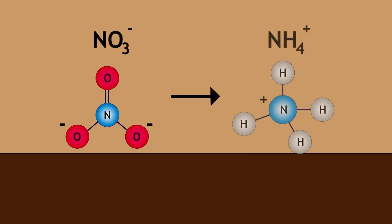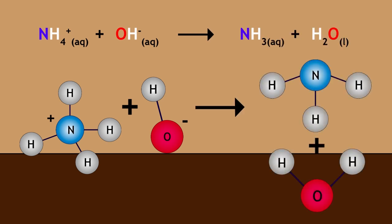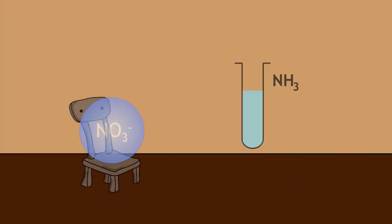Nitrates can be reduced to ammonium ions, which can then react with hydroxide ions to produce ammonia. Ammonia turns damp red litmus paper blue and forms a white smoke of ammonium chloride in the presence of concentrated hydrochloric acid.